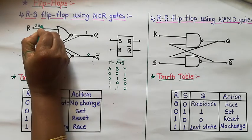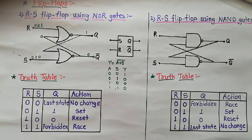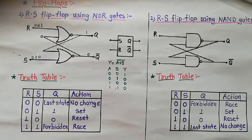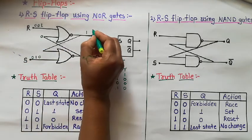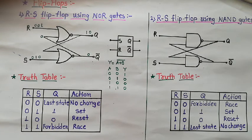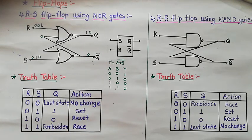If R=1 and S=0, then one input to the upper NOR gate is high. Therefore its output is low, so Q equals 0. When Q equals 0, Q bar equals 1, because Q and Q bar are always complementary. When Q equals 0, the flip-flop is reset.